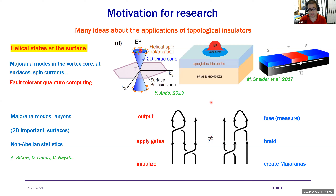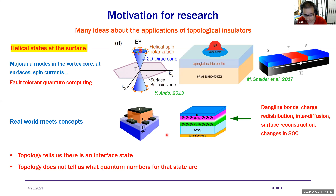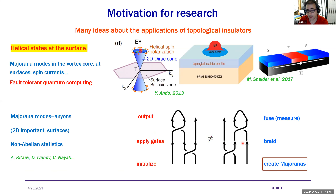In my language, quantum computing means: initialize the system by creating Majoranas, apply gates by braiding them — they obey non-Abelian statistics so braiding is non-commutative and encodes information — then measure the output by fusing and measuring them, which means measuring an electron since a Majorana is half an electron. We know best how to do the measurement part. The stumbling block is how to create Majorana particles in condensed matter systems.